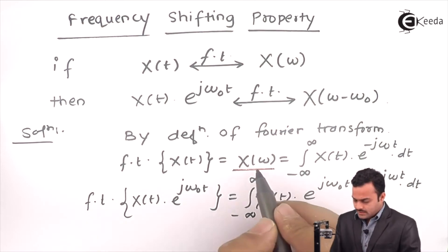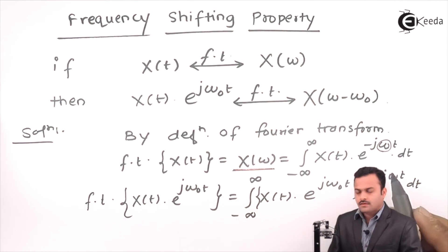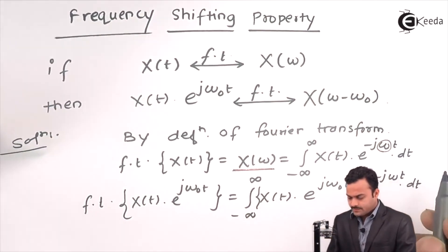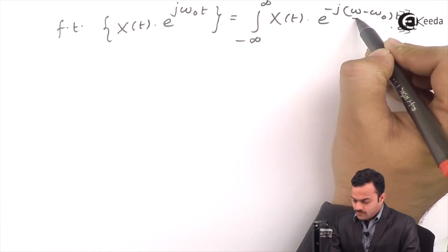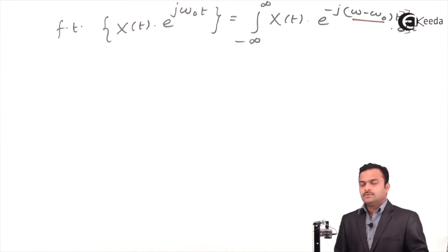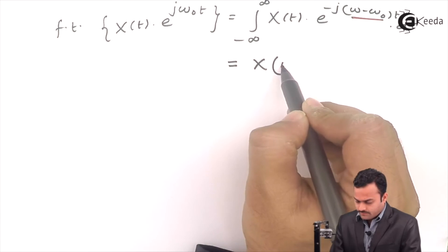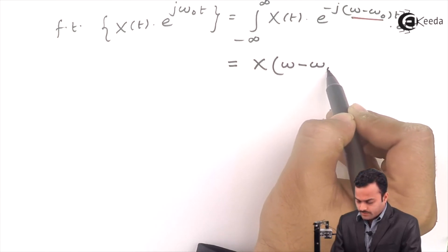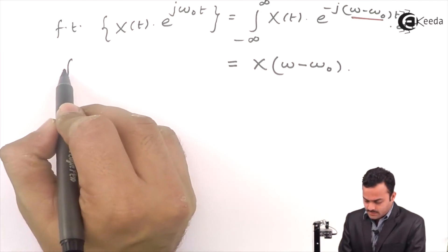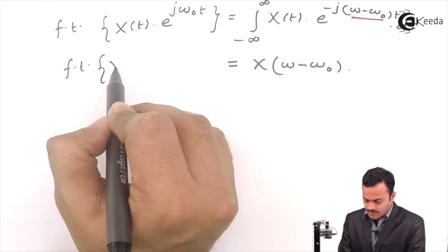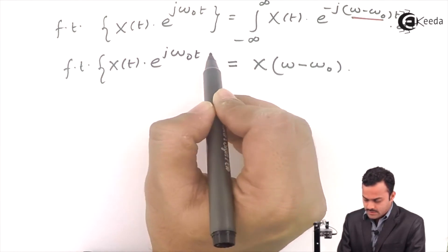So, what I observe here is that X(ω) arises because of this exponential term. Applying the same concept here: instead of ω, I have ω minus ω₀. So I can easily say this is nothing but X(ω − ω₀). Therefore, X(ω − ω₀) is the Fourier transform of x(t) into e raised to j·ω₀·t.